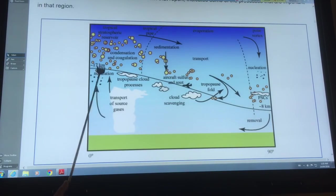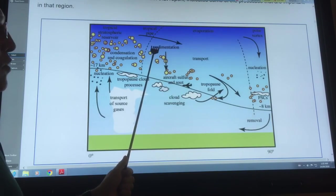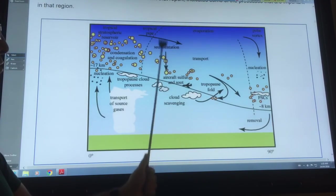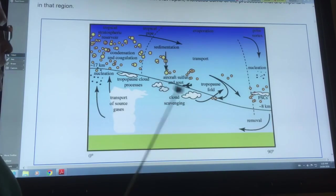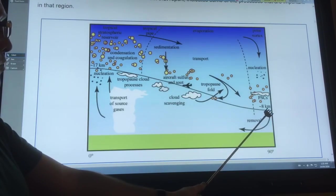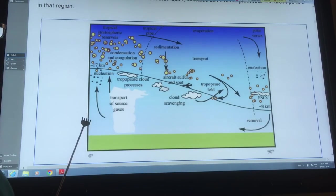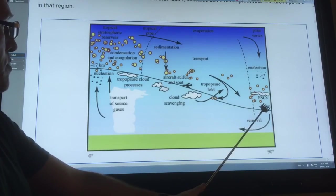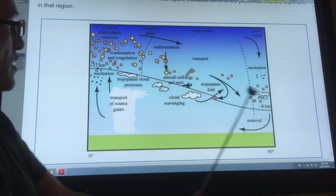This shows you where the tropopause is. Above it's the stratosphere, below it's the troposphere. You get aircraft sulfur and soot created. They act as cloud condensation nuclei. There's sedimentation. Gravity pulls it out of the atmosphere. Some of it goes back down into the troposphere. Eventually when it gets in the troposphere it's rained out very quickly within a week, but when it's in the stratosphere it stays there for quite a while. This is why large volcanoes can cool the planet if they put material into the stratosphere.